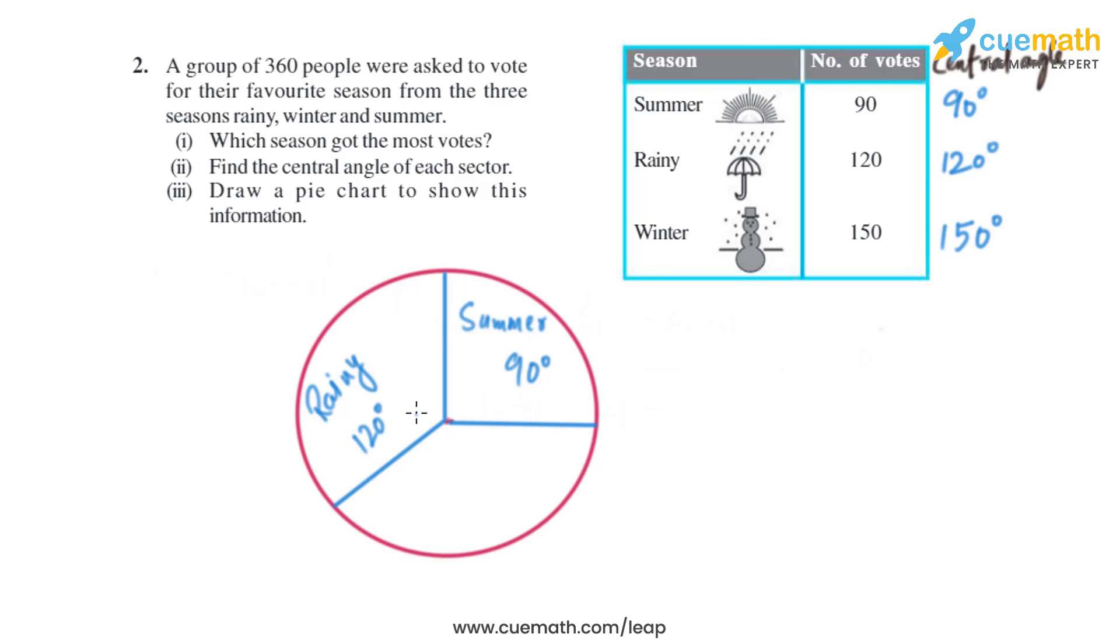Now the part that is left over is basically winter season, which is 150 degrees. This is how we will draw a pie chart from the following information that is given.